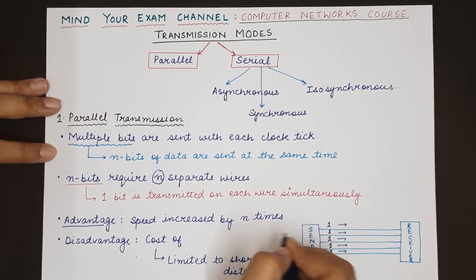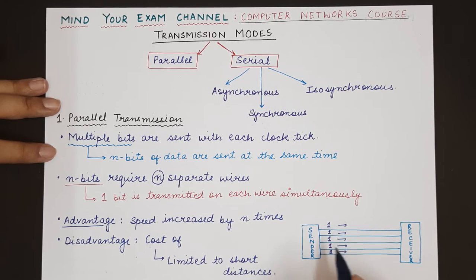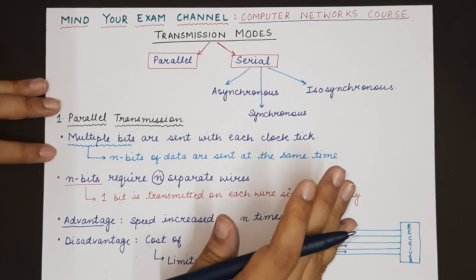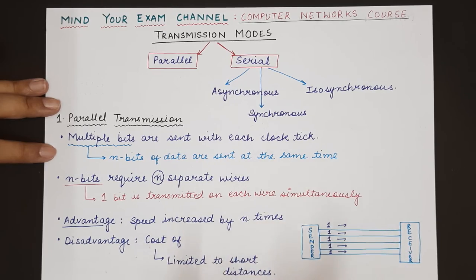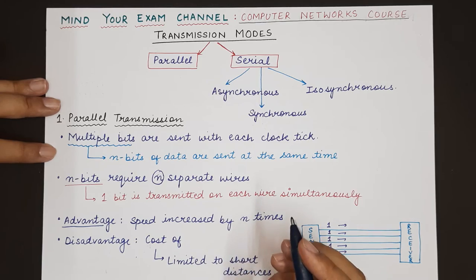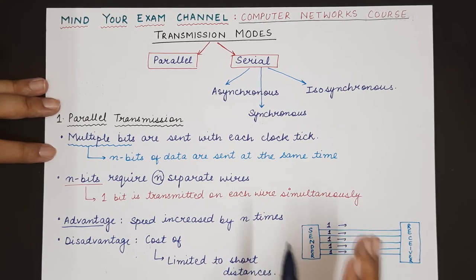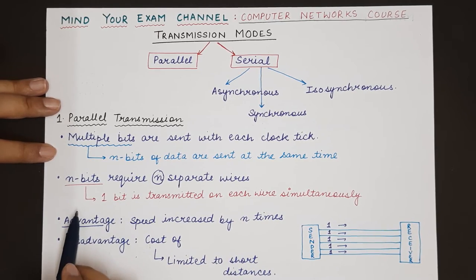As compared to serial transmission, because in serial transmission there is a single wire and at one point only one bit is transmitted. If the second bit has to be transmitted, it will be sent on the same wire after the previous bit. If we have n different wires, we can send n times the data that is being sent by serial transmission. This is the advantage of parallel transmission.